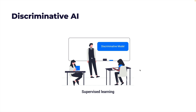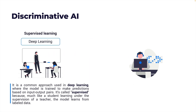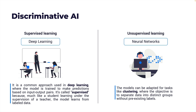Discriminative models are mostly trained through supervised learning, a common approach where models are trained to make predictions based on input-output pairs. It is called supervised because, much like a student learning under the supervision of a teacher, the model learns from labeled data. When a neural network is based on unsupervised learning, the models can be adopted for tasks such as clustering, where the objective is to separate data into distinct groups without pre-existing labels.